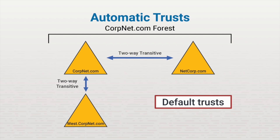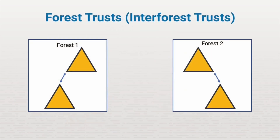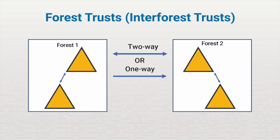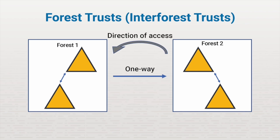If default trusts don't meet an organization's needs, then you will need to use one or more of the other four trusts. The next type of trust is the forest trust, sometimes called inter-forest trust. Forest trusts are transitive and can be either two-way or one-way directional. This allows users from one forest to access resources in another forest. A one-way forest trust may be used in a situation where, for example, there is a merger or acquisition and Forest 2 users need access to the resources in Forest 1, but the resources of Forest 2 need to be protected from users in Forest 1.